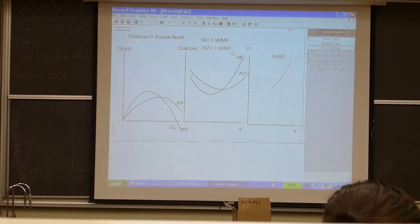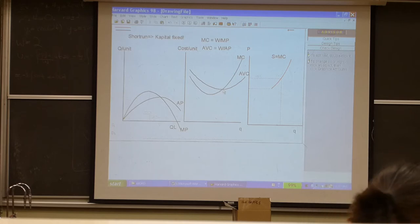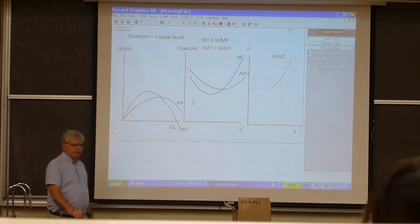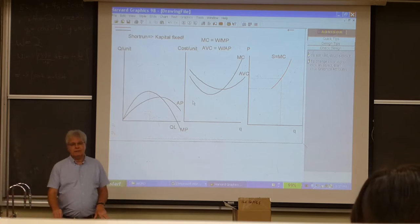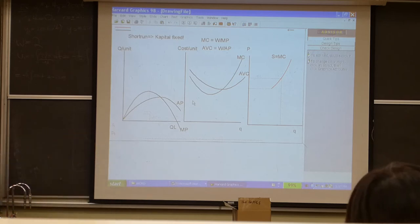Average variable cost is W divided by AP. It's the analog of this one, AP. The one thing to remember is because the margin is falling and below the average, the average is falling. When the margin equals the average, the average is at minimum. I cannot reiterate enough: marginal product dictates the behavior of average product, marginal cost, and average variable cost.